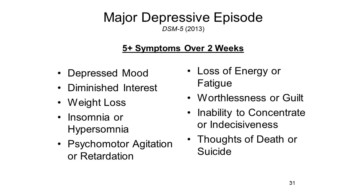This same idea of psychiatric diagnoses as fuzzy sets is applied throughout the DSM. So, for example, in order to receive a diagnosis of major depressive disorder, the patient has to show at least five of nine characteristic symptoms over a period of two weeks. Any five will do—none is necessary, and a total of five is sufficient. Note that you don't even have to be depressed to get a diagnosis of major depressive disorder. Diminished interest in things, coupled with weight loss, insomnia, loss of energy, and inability to concentrate—that will do the trick too.